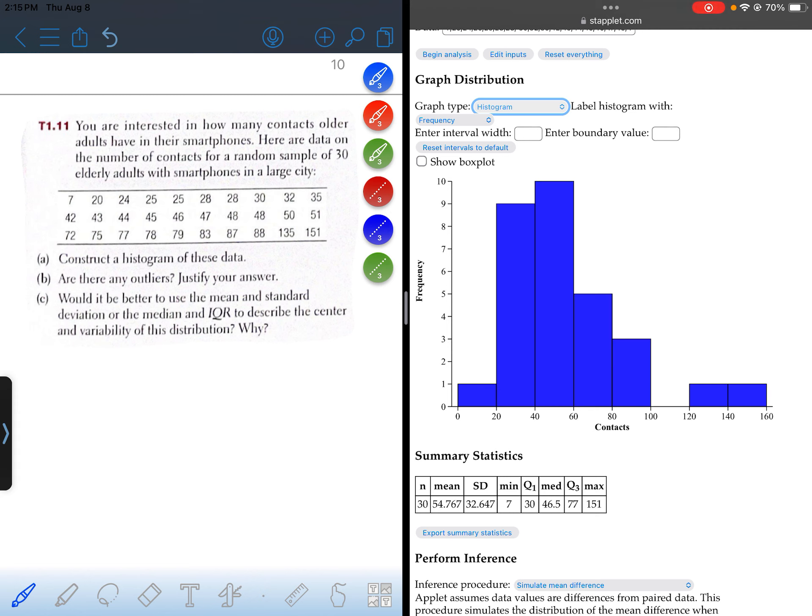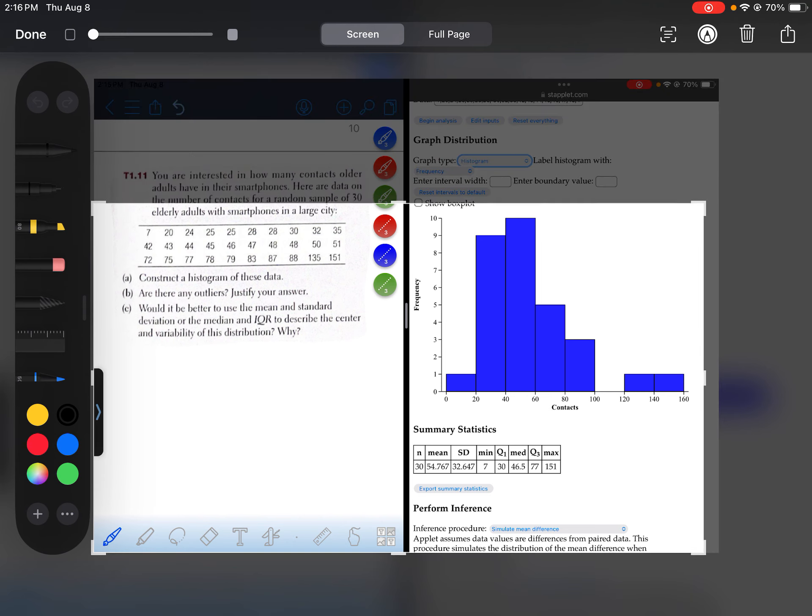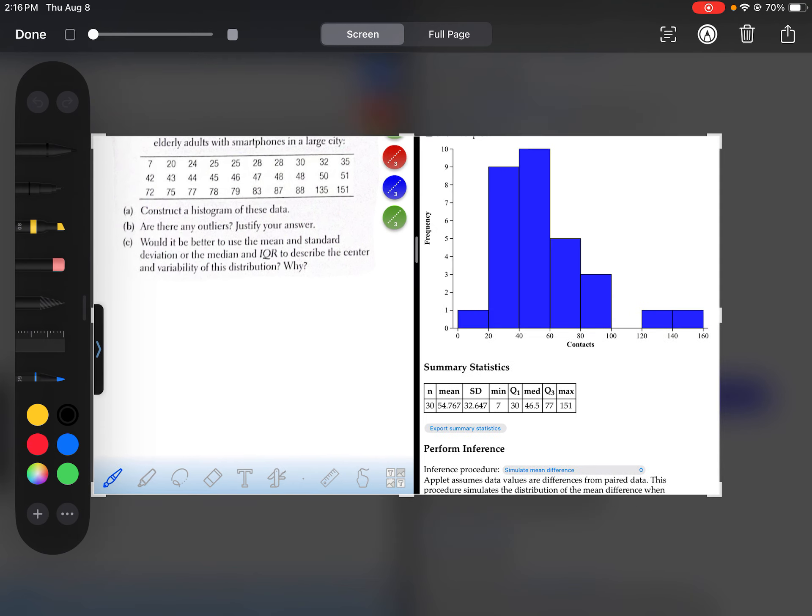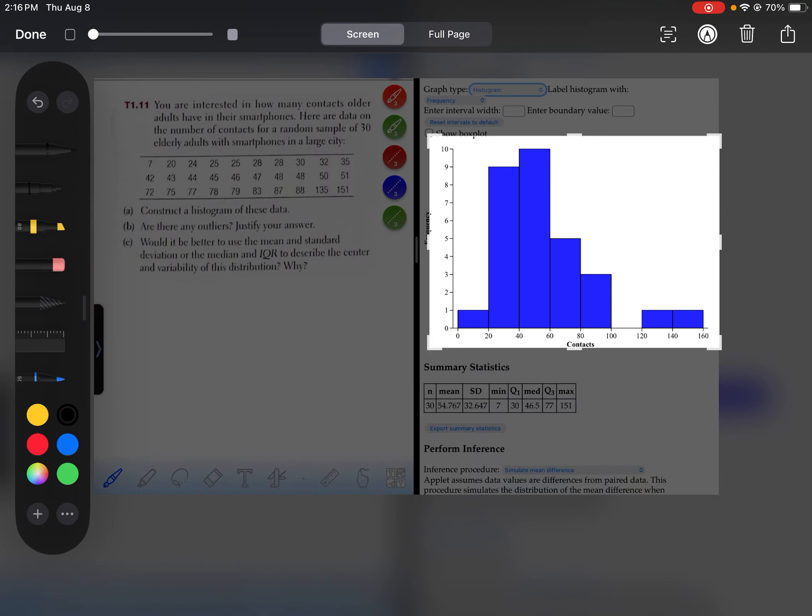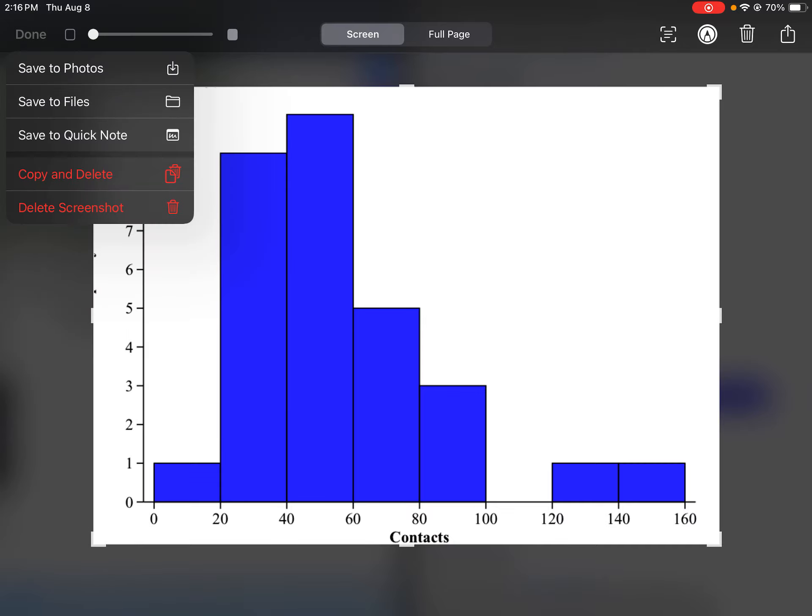So on the horizontal axis we've got contacts and it's binning them by every 20. Remember that if there was a 20 in the data set it would always get pushed to the right bin, not to the left bin. So if there was a 20 it'd go in the second bin, it would not count in the first bin. If there was an 80, 80s would go in the fifth bin, not the fourth bin.